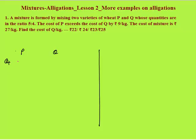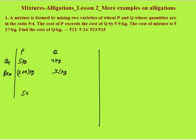Quantity is in the ratio of 5 is to 4, so let us say this is 5 kg and this is 4 kg. The price of P exceeds the price of Q by 9 per kg. Let the price of Q be X per kg, so the price of P would be X plus 9 per kg. Now apply the simple average equation. Total cost of P would be: 1 kg is X plus 9 rupees, so 5 kg would be 5 into (X plus 9). That is the total cost of P.